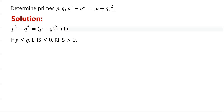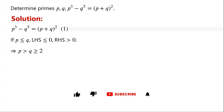If p is less than or equal to q, then the left-hand side of equation 1 is less than or equal to 0, while the right-hand side of equation 1 is greater than 0. So p must be greater than q, which is greater than or equal to 2.